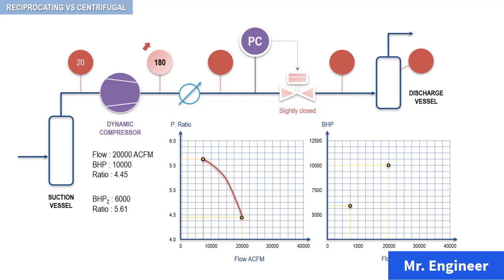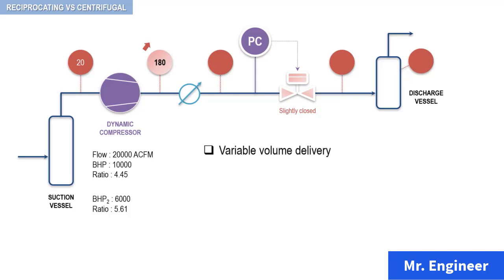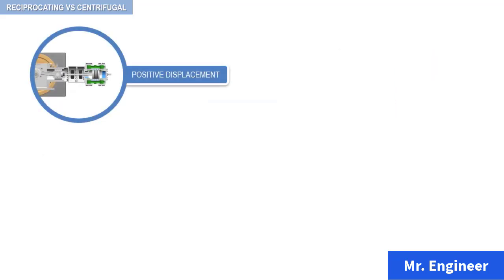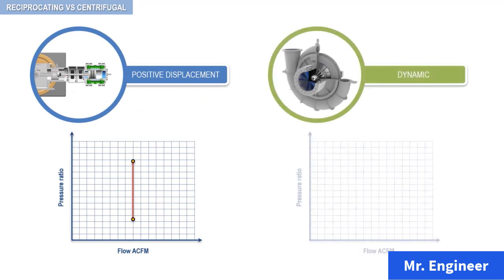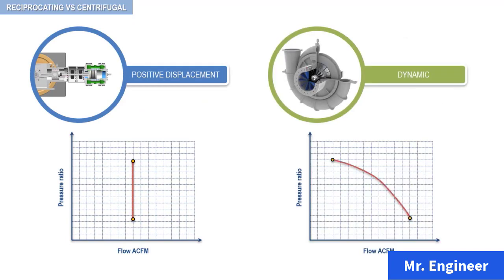By observing these two curves, the characteristics of any centrifugal compressor are as follows. Keep in mind: centrifugal compressors deliver variable volume flow, have a fixed head capacity, and are self-limiting. As opposed to a reciprocating compressor, the centrifugal compressor is self-limiting — it does not require a relief valve to protect the compressor and the driver. The next figure summarizes the characteristics of reciprocating compressors and centrifugal compressors by presenting their typical performance curves.